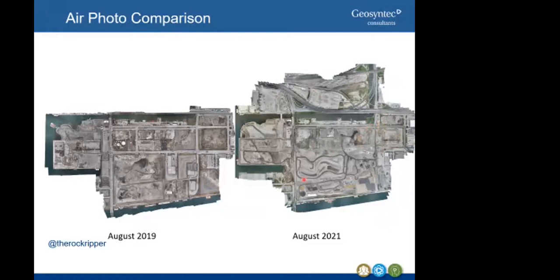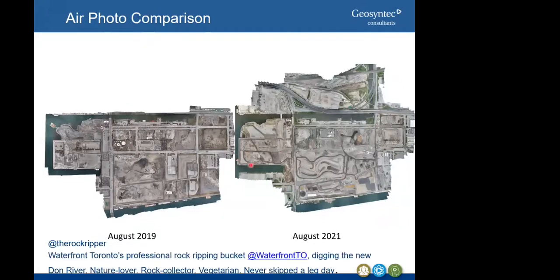Fast forward to August 2021 — two years later — you can really see the defined edge of the main channel. The excavation is all complete and the river finishes are being installed. The greenway is mostly complete. The north end of the ice management area is also being excavated. The north plug and west plug are installed, and those will be removed to connect the channel with the upper Don River. There is some activity in Promontory Park South and Canoe Cove, and soil management areas are visible with stockpiling underway for soil repurposing.